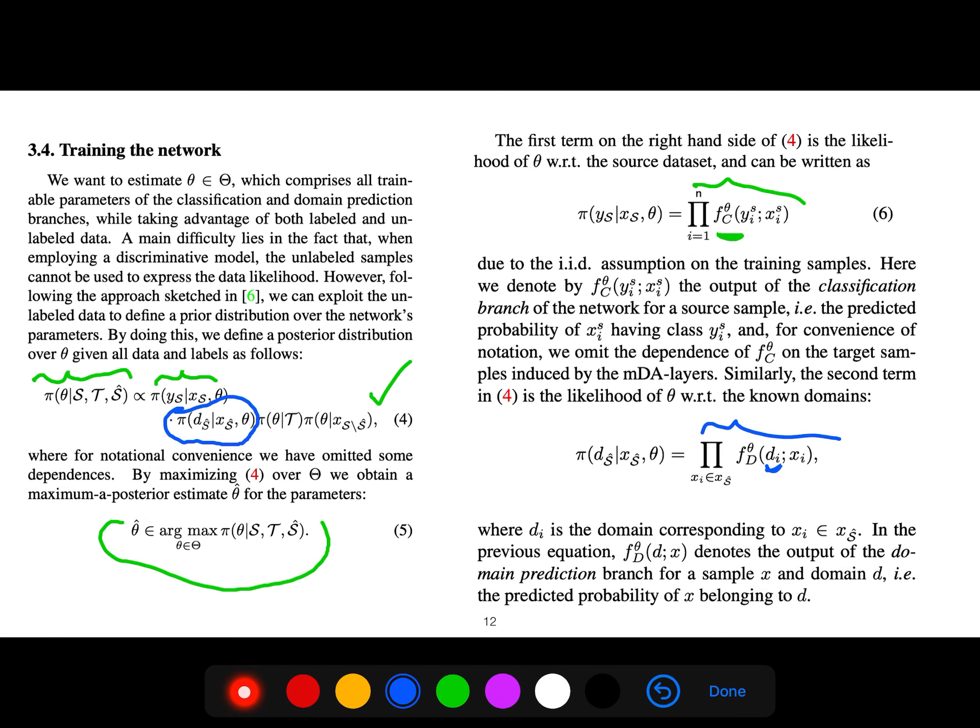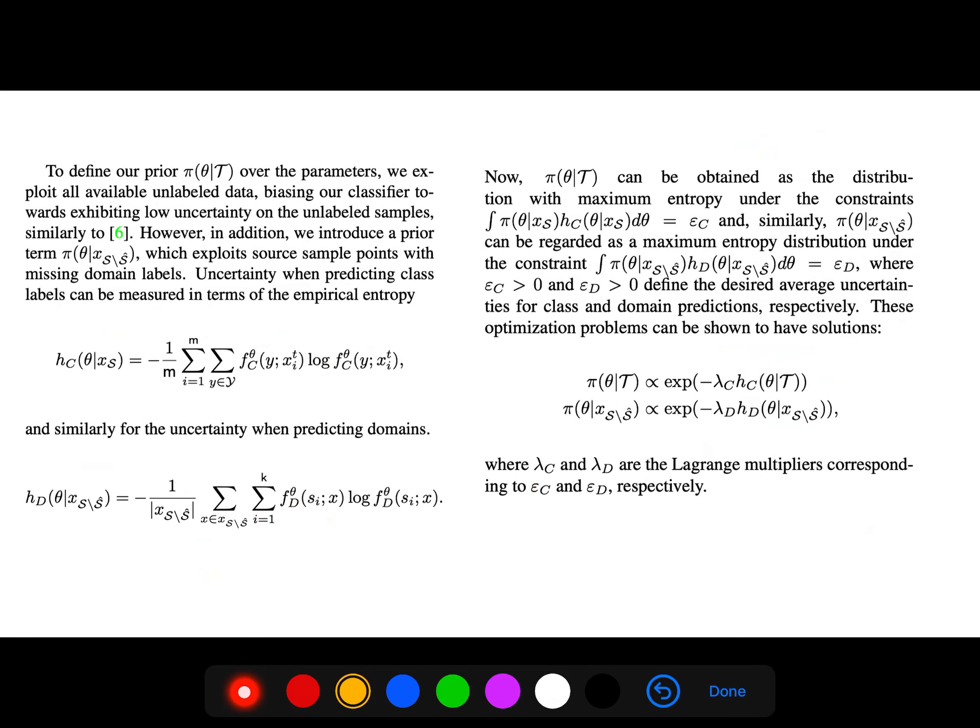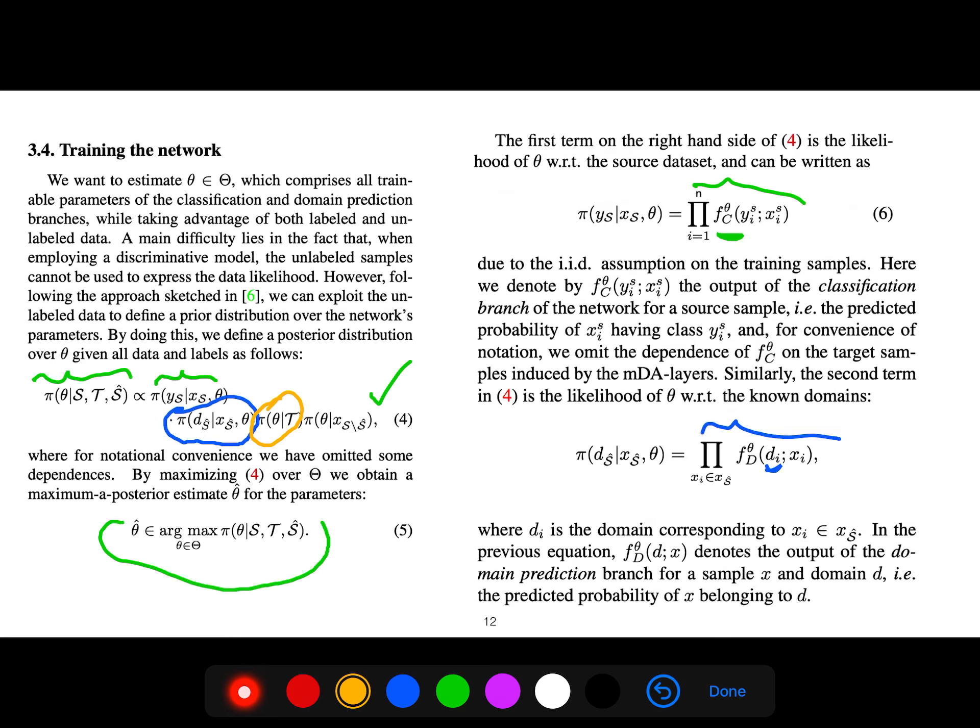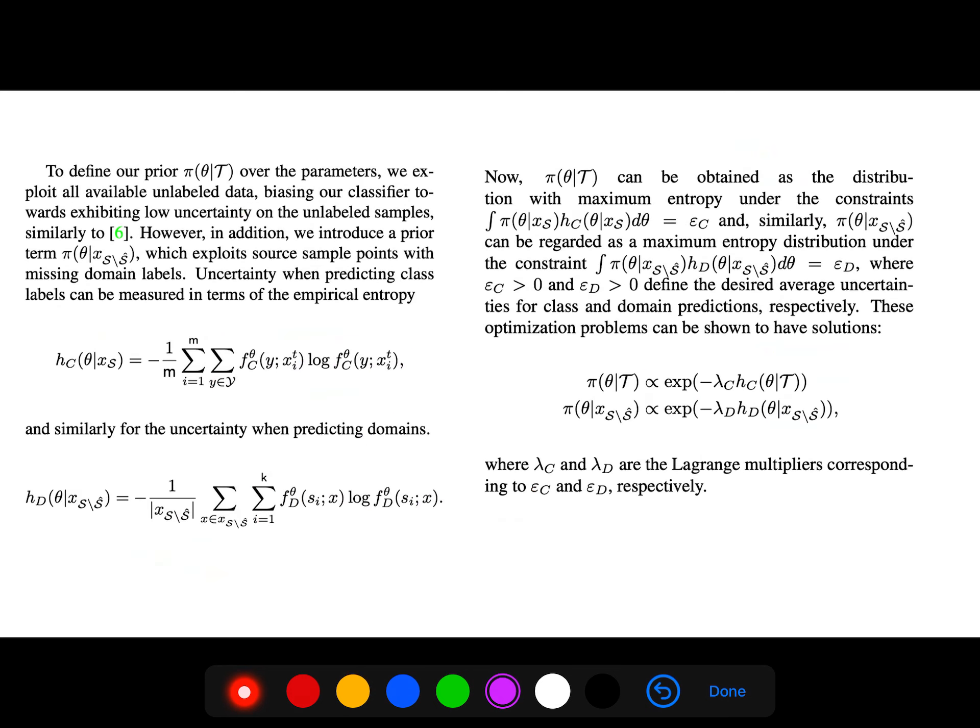And to define our prior, so the next one is prior probability of theta over parameters. We exploit all available unlabeled data, biasing our classifier towards exhibiting low uncertainty on the labeled samples. However, we introduce a prior term, the last one, the probability of theta conditioned on x_s excluding s_hat. What is that for? Because this is another prior which exploits source sample points with missing domain labels.